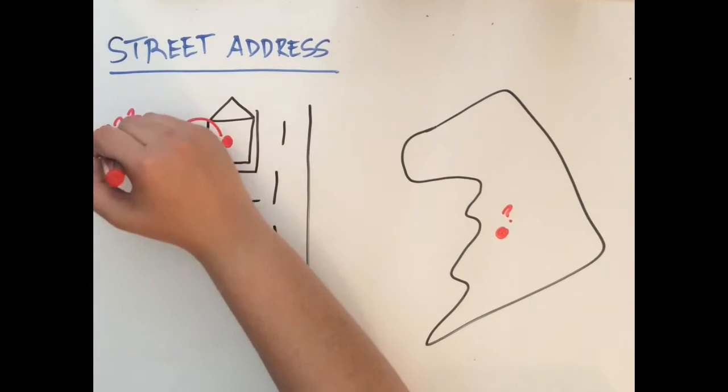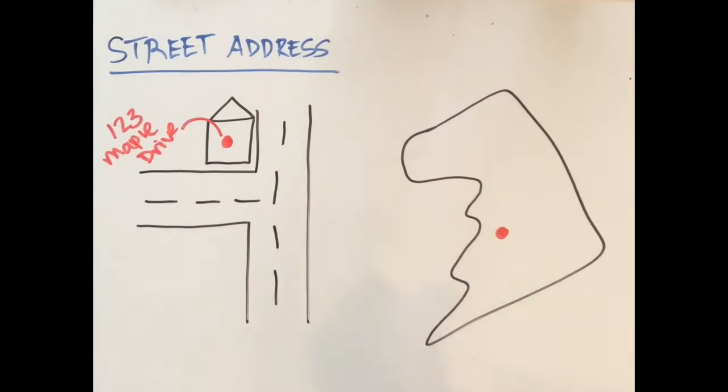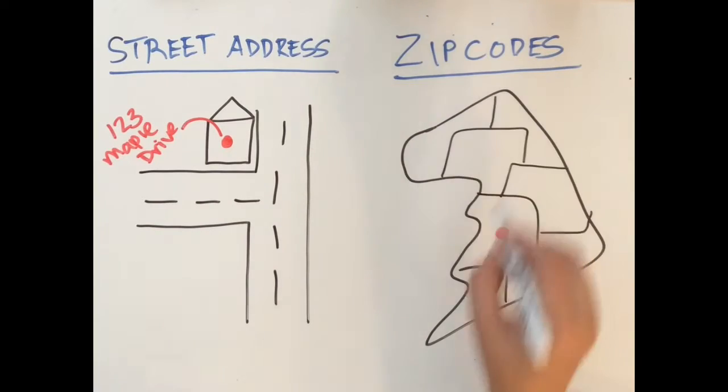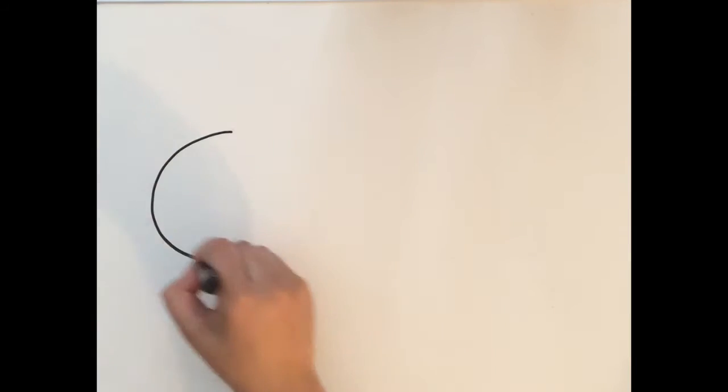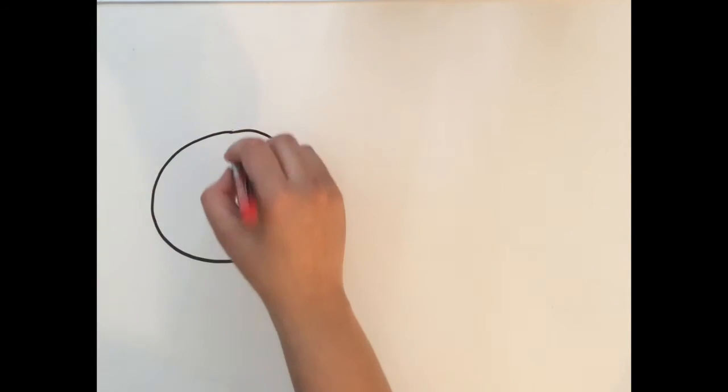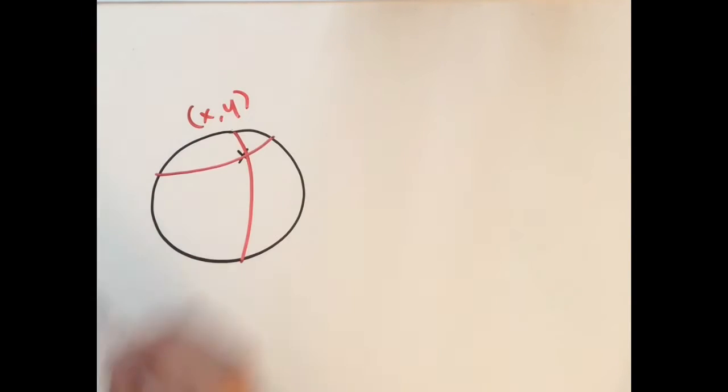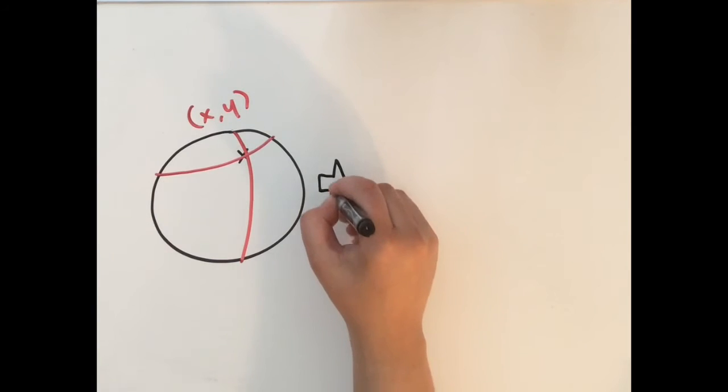Street addresses are a common way to do this. When combined with zip codes, it is possible to attribute location to most of the well-developed human-inhabited spaces around the world. As valuable as these measures are, though, they are arbitrary. Humans built cities and roads, and we assigned their positions. No inherent properties of the Earth determine addresses or zip codes.